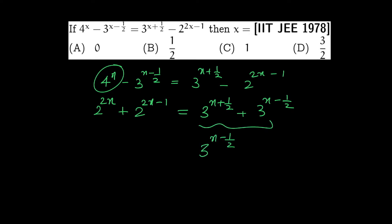3 raise to x minus half is equal to 3 raise to 1, and 3 raise to x minus 1 equals 3 raise to 0.